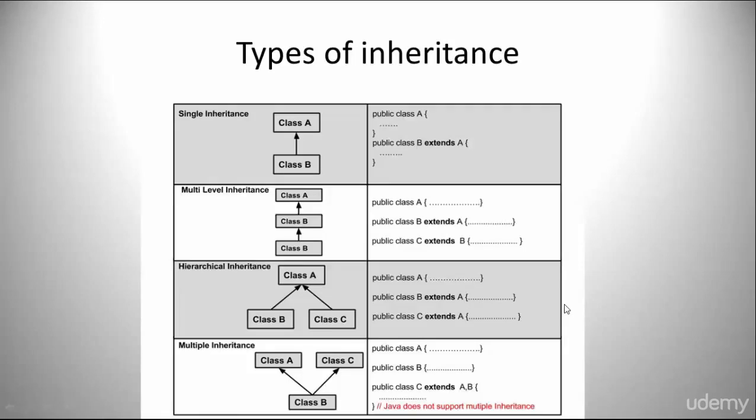Let's look at types of inheritance. Here you can see that we have different levels of types of inheritance. Each extends a class. With the first one, we have public class A, and public class B extends A. This pattern is also carried out through the other types of inheritance.